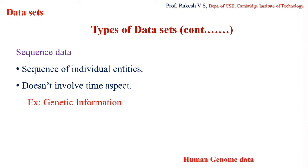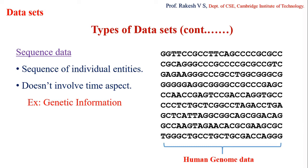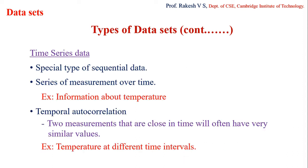An example of sequence data is genetic information — a human genome represented as a sequence of nucleotides such as G, T, C, and A (guanine, thymine, cytosine, adenosine). The genetic information is represented as a sequence of nucleotides, also known as genes. Data mining is applied here to predict similarity in gene structure and predict gene function from those similarities.